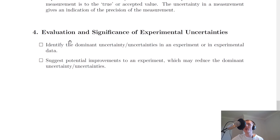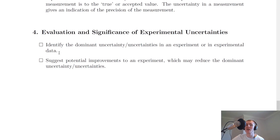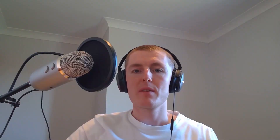Finally, we have section four: evaluation and significance of experimental uncertainties. You need to be able to identify the dominant uncertainty or uncertainties in an experiment or in experimental data. This means working out the percentage uncertainties and comparing them across different quantities. You also need to be able to suggest potential improvements to an experiment which may reduce the dominant uncertainty or uncertainties.